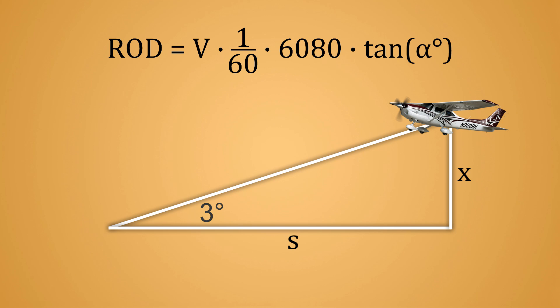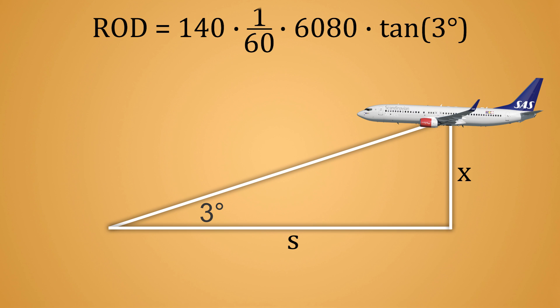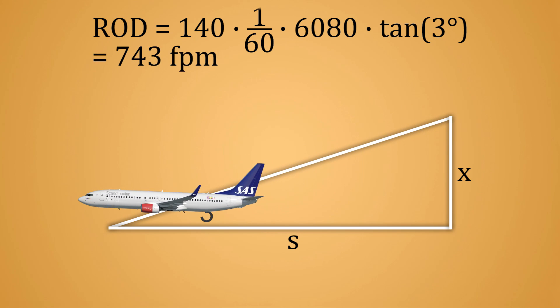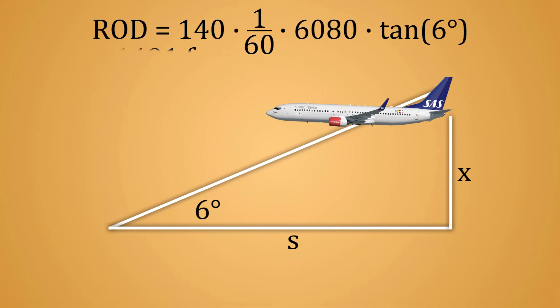You can now use this formula and insert other speeds and angles to get the rate of descent needed. For example, a jet with an approach speed of 140 knots descending on a path of three degrees will need to descend at a rate of 743 feet per minute, but if it wants to descend on a path of six degrees, it will need to descend twice as fast.